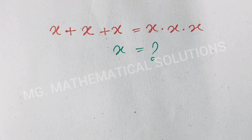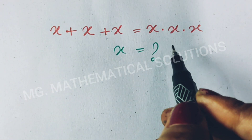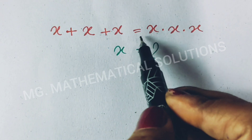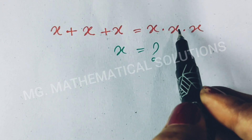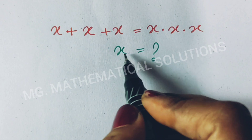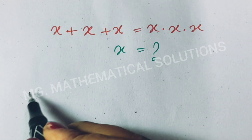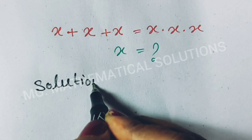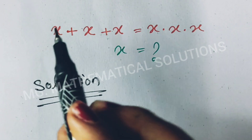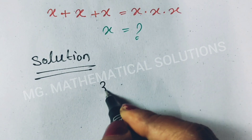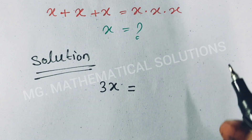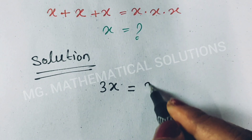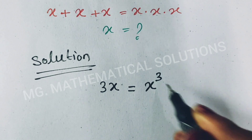Hello students, welcome to solve a nice Math Olympiad problem: x plus x plus x equals x times x times x. Then x equals what? Let's see the solution. x plus x plus x means 3x equals x times x times x, which means x cubed.